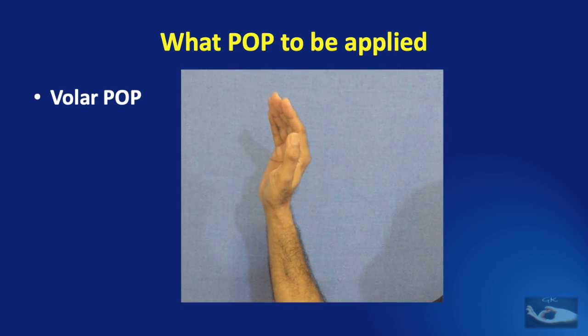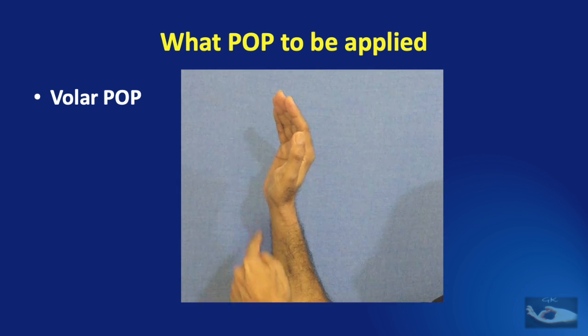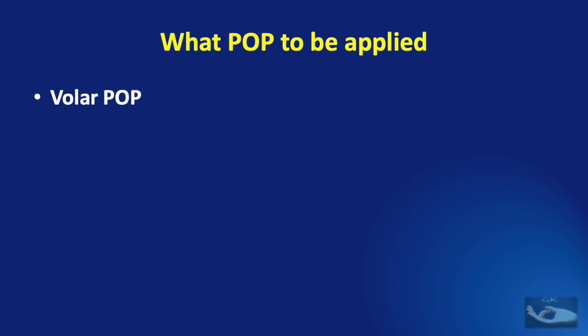The first is a volar POP. This is applied on the volar aspect of the hand and a below elbow volar POP extends up to the middle of the forearm on the flexor aspect.